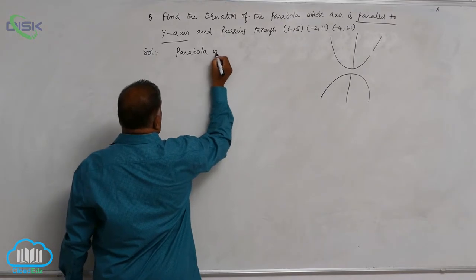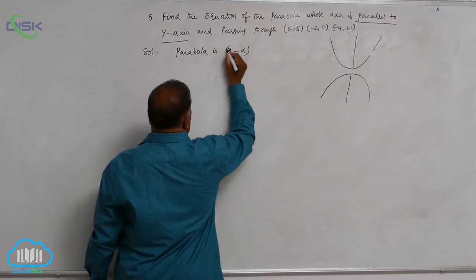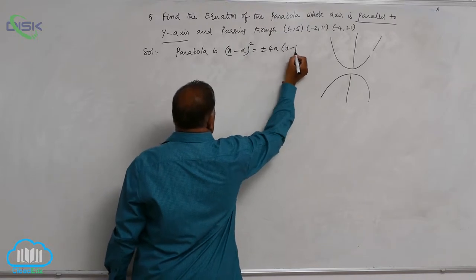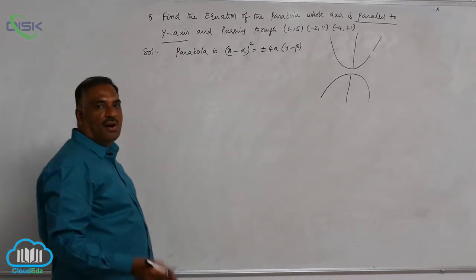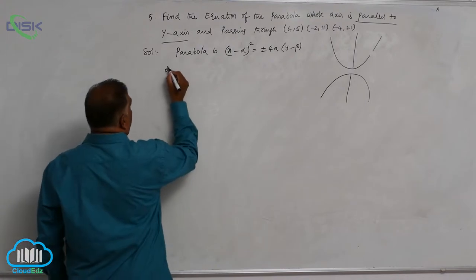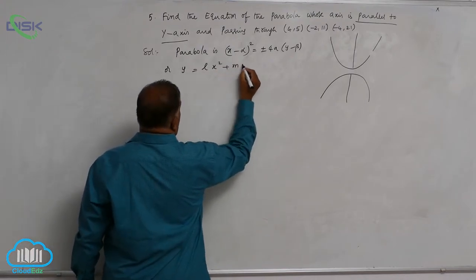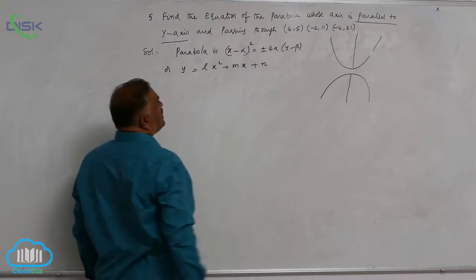So parabola is given by x minus alpha whole square is equal to plus or minus 4a into y minus beta, or you can simplify as y is equal to lx squared plus mx plus n.